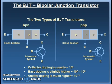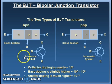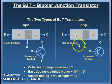Let us consider the basic construction of the BJT. There is a P region sandwiched between two N regions, which is called an NPN transistor. And there is one more type where an N region is sandwiched between two P regions, which is known as a PNP transistor.